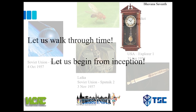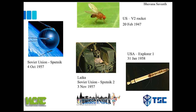Who would have thought the first ever creature to jettison into outer space would be fruit flies? Yes, Drosophila melanogaster, otherwise called fruit flies, were launched by the United States on the 20th of February 1947. On 4th October 1957, the day that marked the beginning of the space age, the Soviet Union launched Sputnik 1, the first artificial satellite in orbit. Then on 3rd November 1957, Laika became the first to orbit in outer space on Sputnik 2, yet again by the Soviet Union.